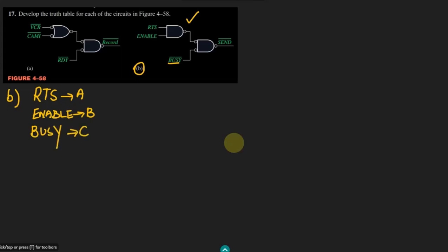The output is called 'send' and we keep it unchanged. Now, we can see that RTS and enable are applied to this NAND gate, so the output of them will be A·B, whole complement.